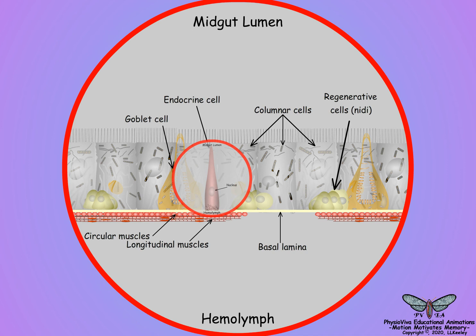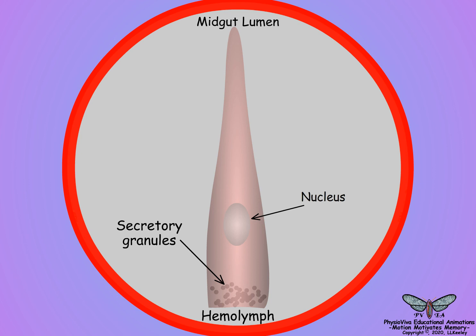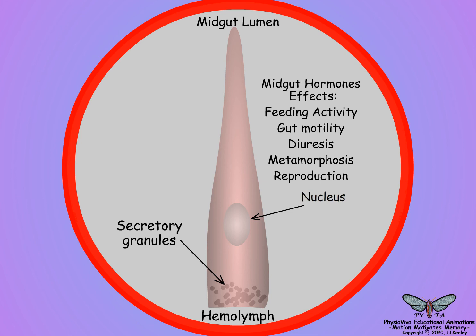Endocrine cells are few and scattered, and are elongate with dark secretory granules along their basal membranes, where the hormones are released into the hemolymph by exocytosis. Gastric endocrine cells typically secrete peptide hormones and monoamines. Midgut hormones may affect physiological processes related to nutrient intake and the nutritional state of the insect, such as feeding activity, gut motility, water balance, metamorphosis, and likely reproduction.